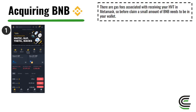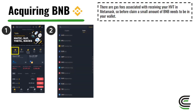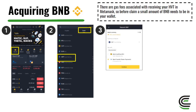Once your Binance is set up, click Deposit, then click Cash. We're going to deposit GBP or whichever local currency you're using, as this has the least amount of fees — when depositing via bank transfer there are no fees. Click Cash, select GBP, then click Bank Transfer. You can choose Card if you prefer, but it has a 1.8% transaction fee.